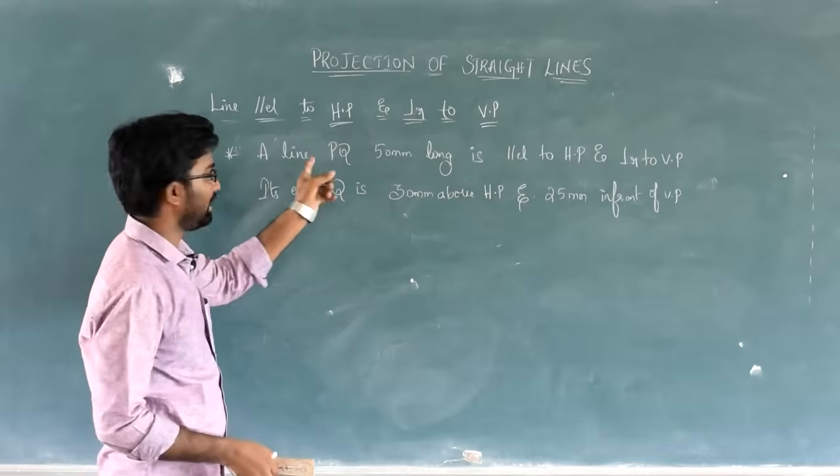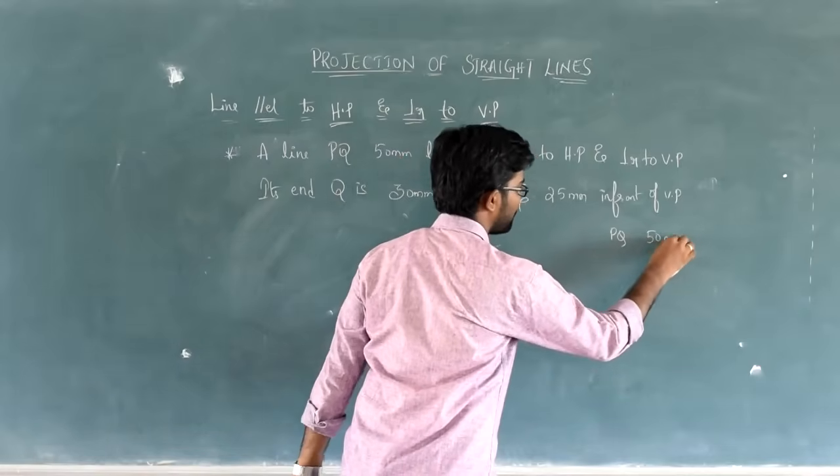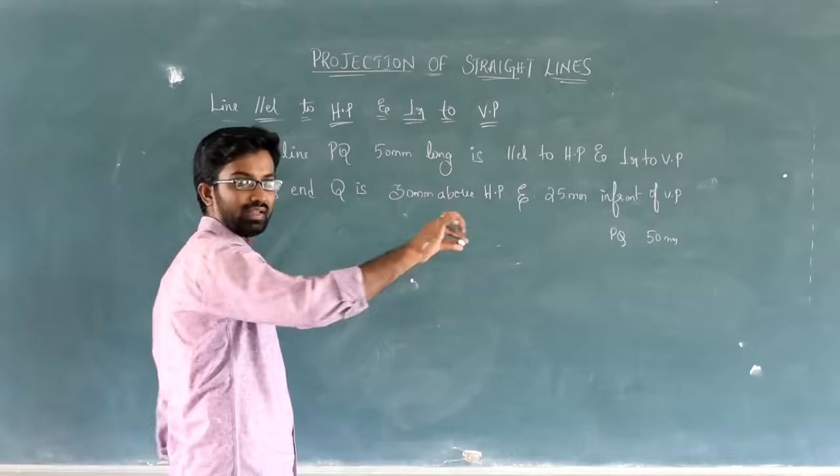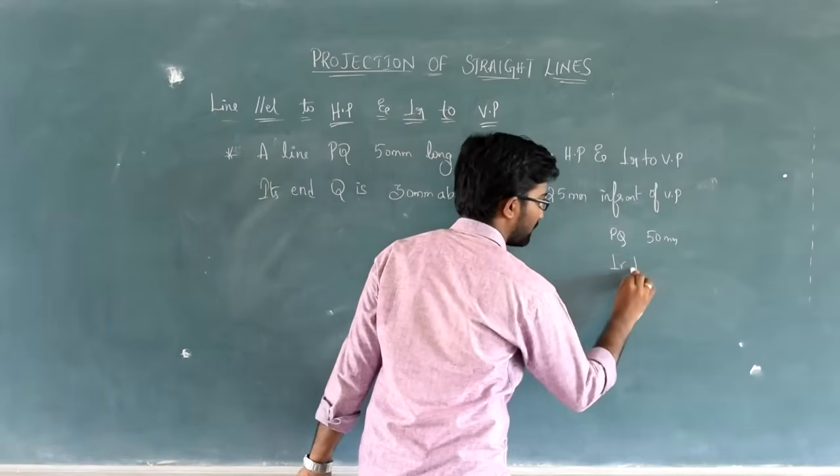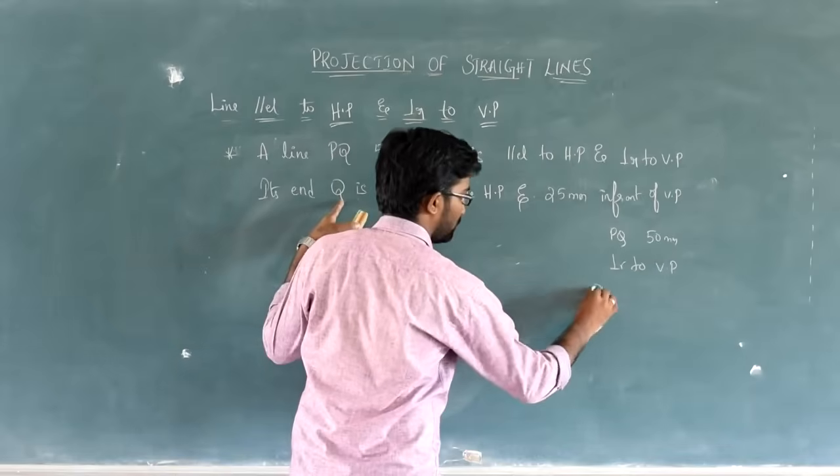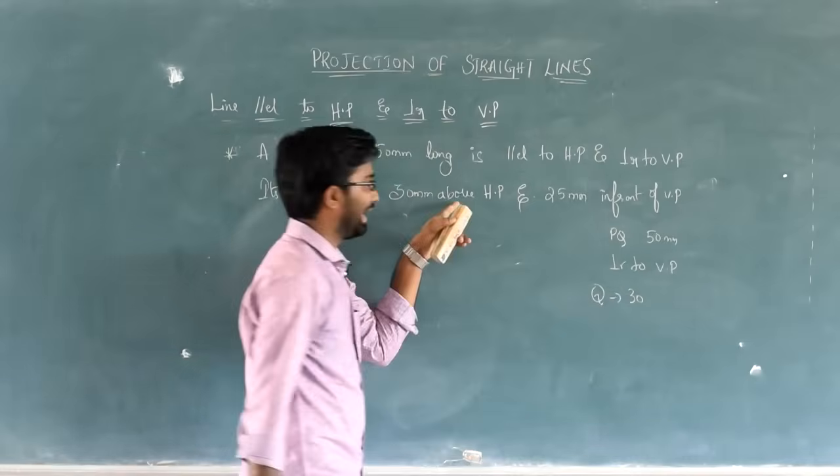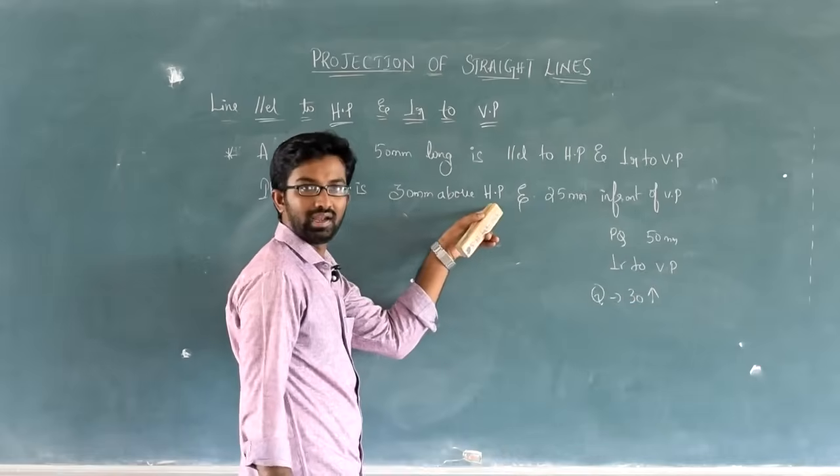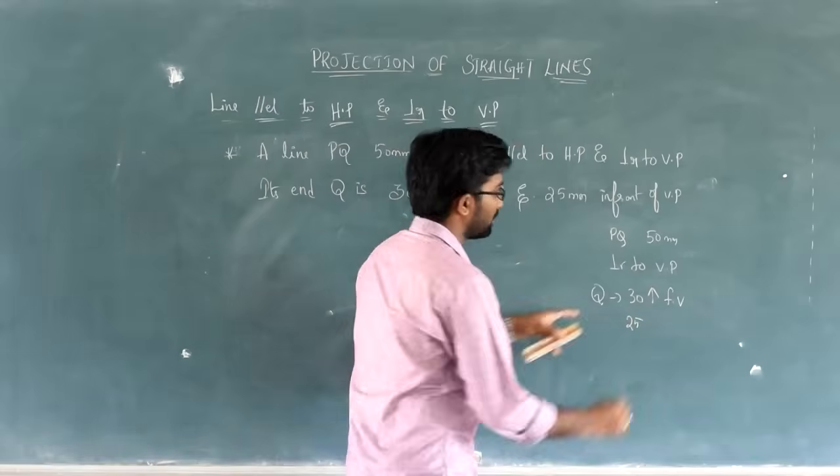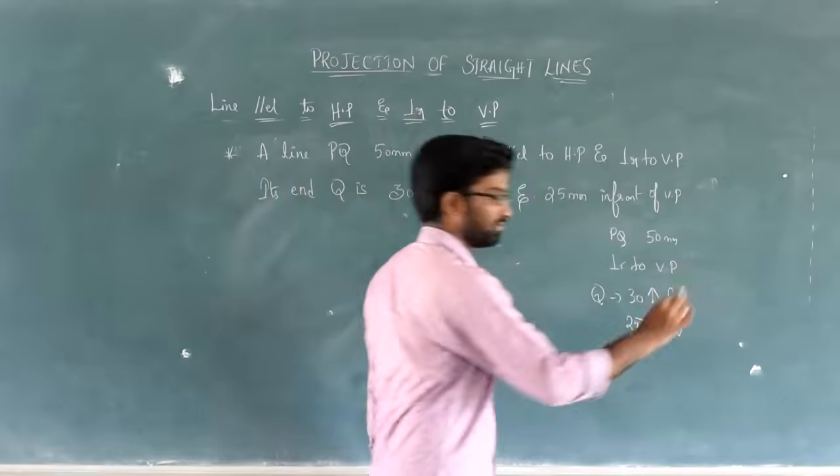So, this is my question. A line PQ, 50 mm long, parallel to HP, perpendicular to VP. Perpendicular to VP means it pierces VP. So, this is the position. Next, its end Q is 30 mm above HP - 30 mm upward, HP means front view.